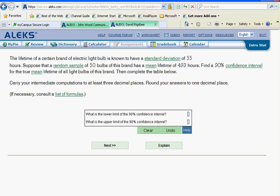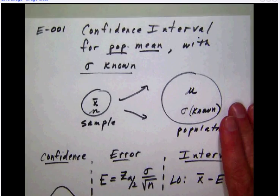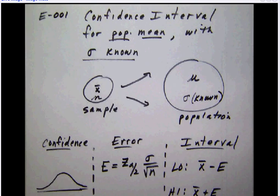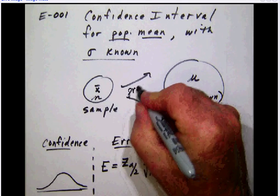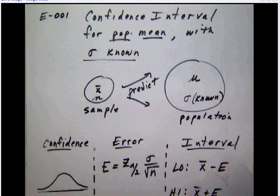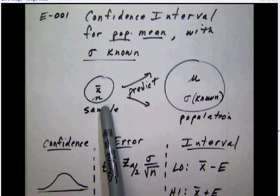Let's take a minute and look at our notes. As we talked about earlier, confidence intervals are a way for us to make predictions about an unknown population parameter. In this case, the population mean, if we have a representative sample.